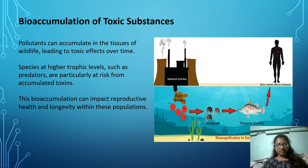Bioaccumulation: pollutants can accumulate in the tissues of wildlife, leading to toxic effects over time. Species at higher trophic levels are particularly at risk from accumulated toxins. Bioaccumulation can impact the reproductive health and longevity of these populations.